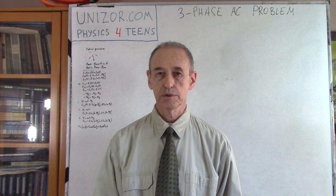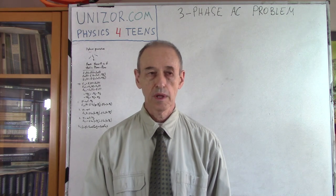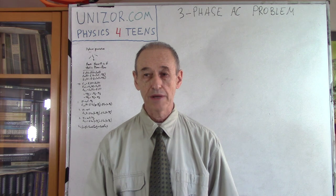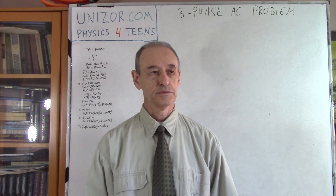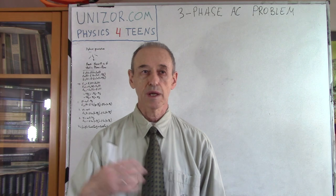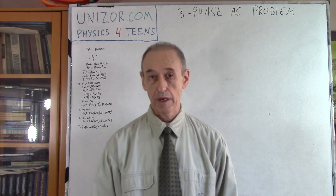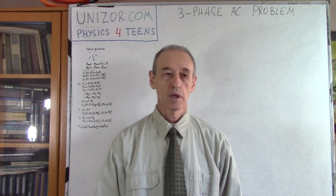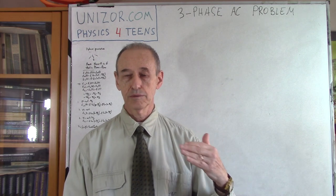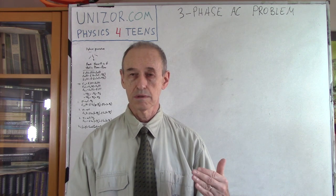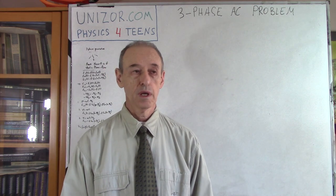I would like to continue talking about three-phase alternating current and solve a very simple problem. The problem has practical implementation and practical need, because sometimes in our households we can use electricity of 120 volts and sometimes 220. Certain appliances like an electric stove or a powerful air conditioner require 220 volts, because they consume a lot of energy. If you increase the voltage you can proportionally decrease the amperage, to prevent certain accidents. In any case, we do need both. The question is how it's done.